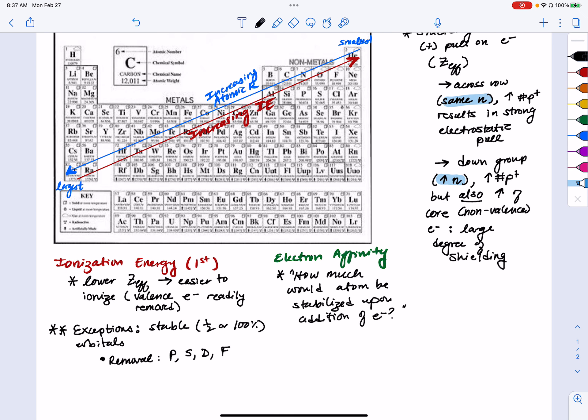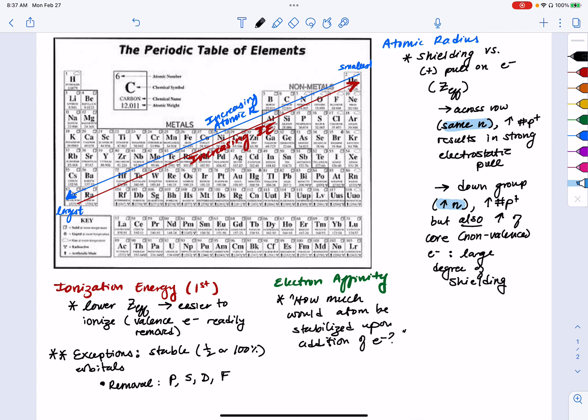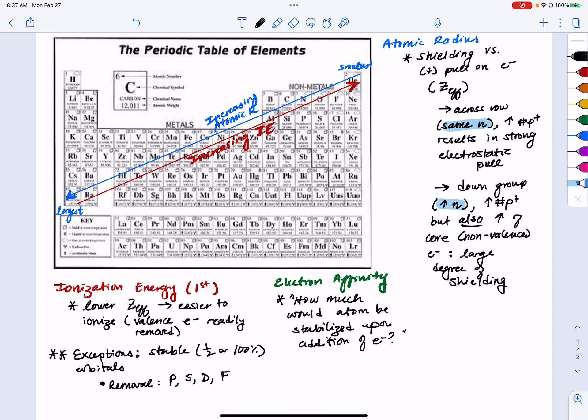But again, the trend is the same. When we're thinking about what atoms are going to be most likely to be willing to take in a new electron, it's going to be the atoms that have a higher effective nuclear charge, meaning atoms whose valence shells can take an electron in that will feel quite strongly the positive pull of the nucleus.